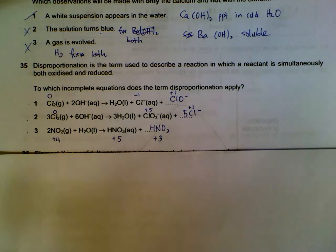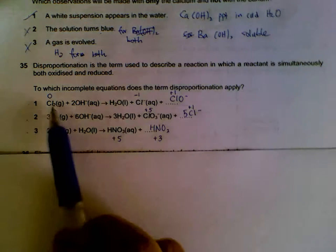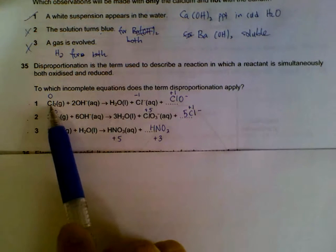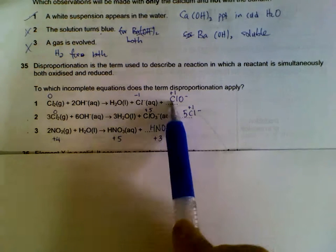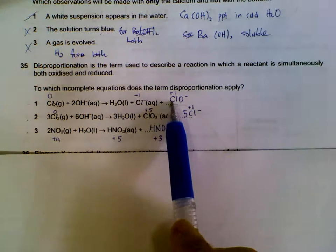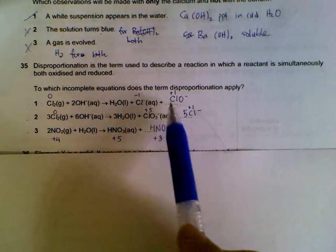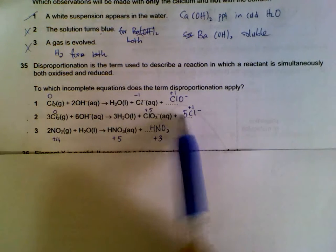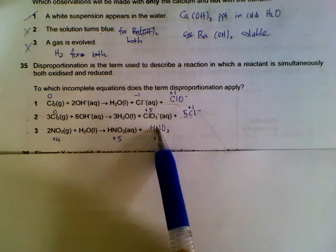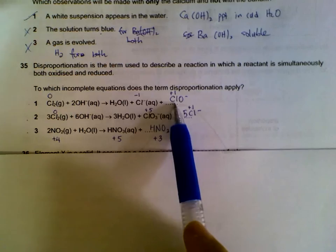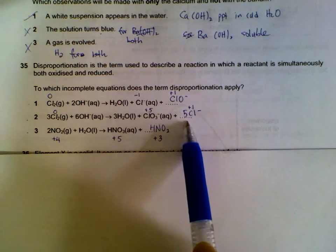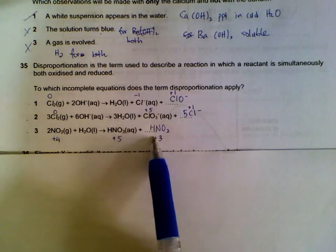Question 35. We have to check whether something is oxidized and reduced at the same time. For chlorine, 0 to -1 is reduced, 0 to +1 is oxidized. And before that we have to balance the equation. These are the missing substances that we have to fill in: ClO- for the first one, Cl- for the second one, and H2O for the third one.